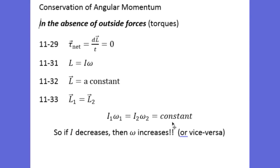But there can be internal forces. If there is an internal force that can cause the moment of inertia of the object to decrease, then omega must increase because the product of the two stays constant.